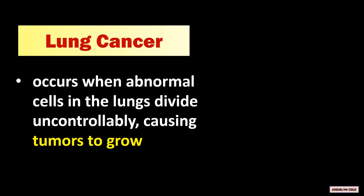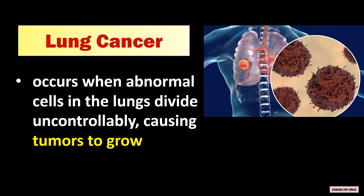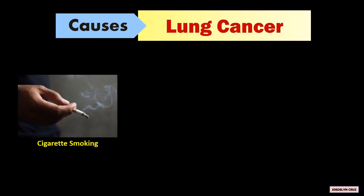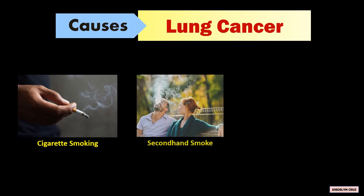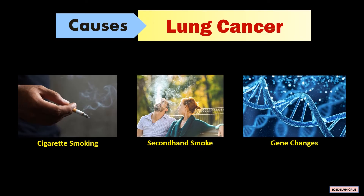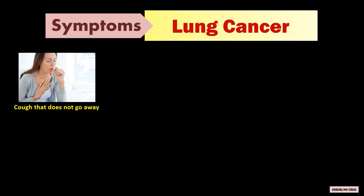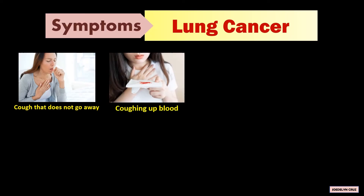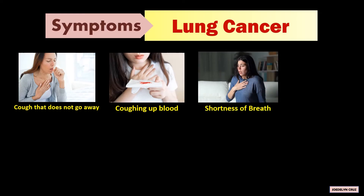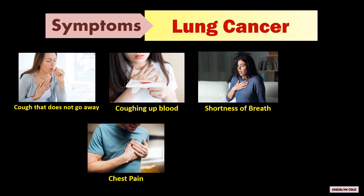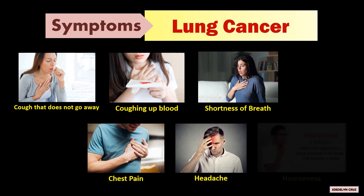Lung cancer occurs when abnormal cells in the lungs divide uncontrollably, causing tumors to grow. These are the tumors in the lungs. Cigarette smoking is the number one cause of lung cancer; other causes are secondhand smoke and gene changes. The symptoms of lung cancer are a cough that does not go away, coughing of blood, shortness of breath, chest pain, headache, and hoarseness.